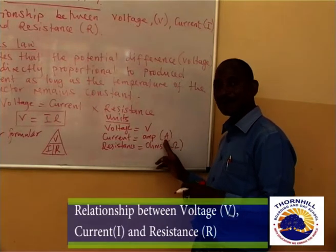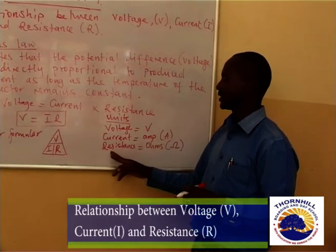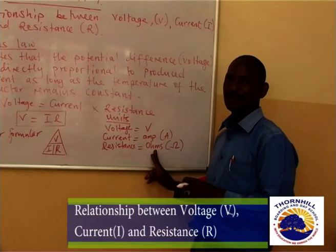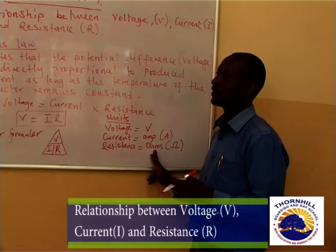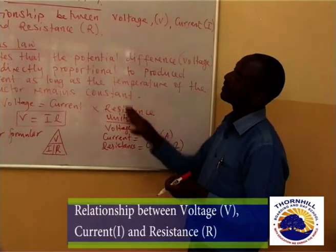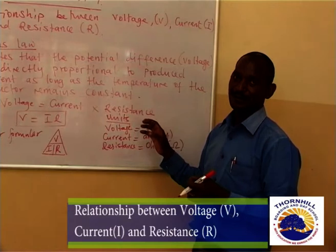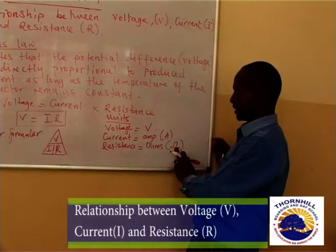Remember the units: voltage V is in volts, current is in amps — capital A — and resistance is in ohms, where we remember Mr. Ohm and his Ohm's Law, symbolized by the omega symbol.